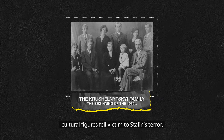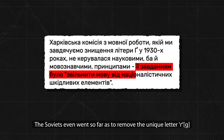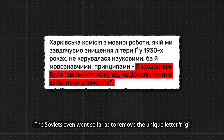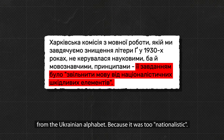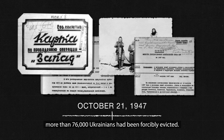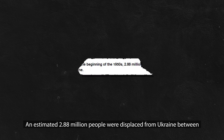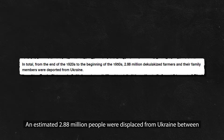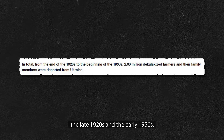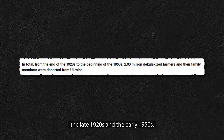Dozens of Ukrainian cultural figures fell victim to Stalin's terror. The Soviets even went so far as to remove the unique letter 'Ґ' from the Ukrainian alphabet, because it was considered too nationalistic. On 22nd October 1947, they launched Operation West. By the end of October, more than 7,600 Ukrainians had been forcibly evicted. An estimated 2.88 million people were displaced from Ukraine between the late 1920s and the early 1950s.